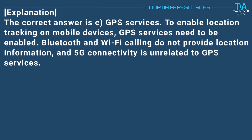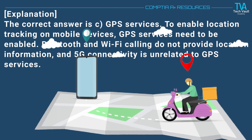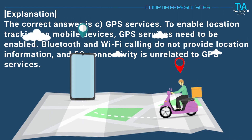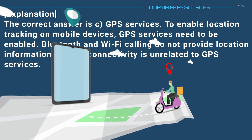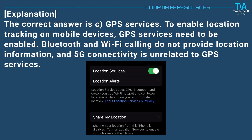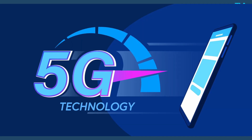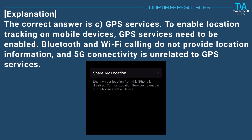The correct answer is C. GPS services. To enable location tracking on mobile devices, GPS services need to be enabled. Bluetooth and Wi-Fi calling do not provide location information, and 5G connectivity is unrelated to GPS services.